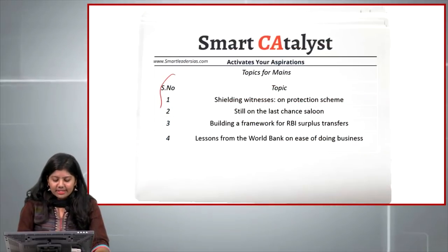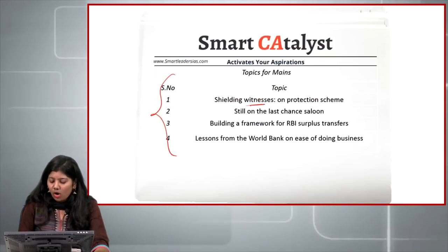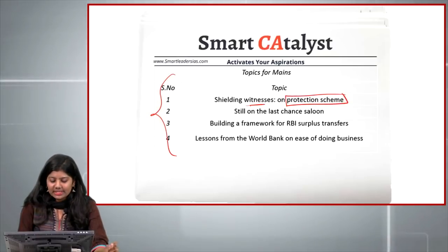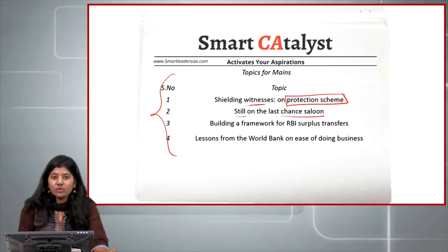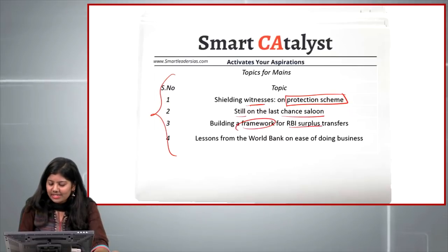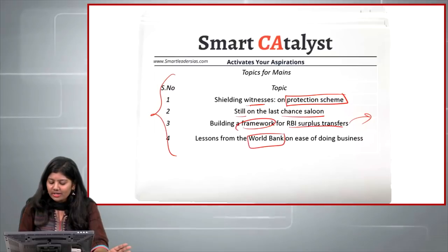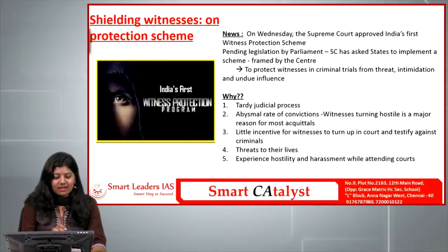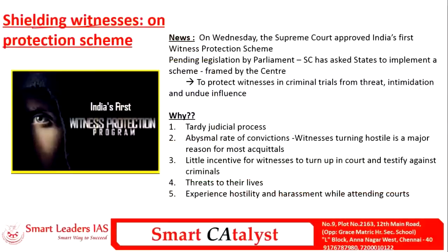Now we are going to see the mains articles. The first one is shielding the witnesses on protection scheme; the second is still on the last chance saloon; the third is building a framework for RBI surplus transfer; and the fourth is lessons from the World Bank on ease of doing business. The first mains article is the witness protection scheme.